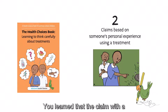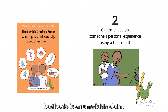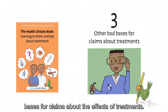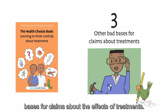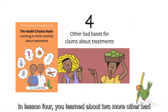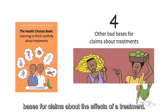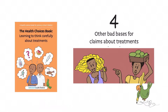You learned that a claim with a bad basis is an unreliable claim. In lesson three, you learned about two more bad basis for claims about the effects of treatments. In lesson four, you learned about two more other bad basis for claims about the effects of a treatment.